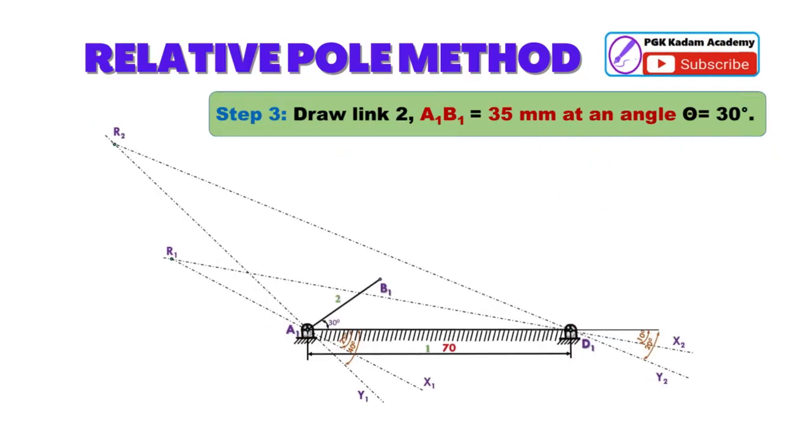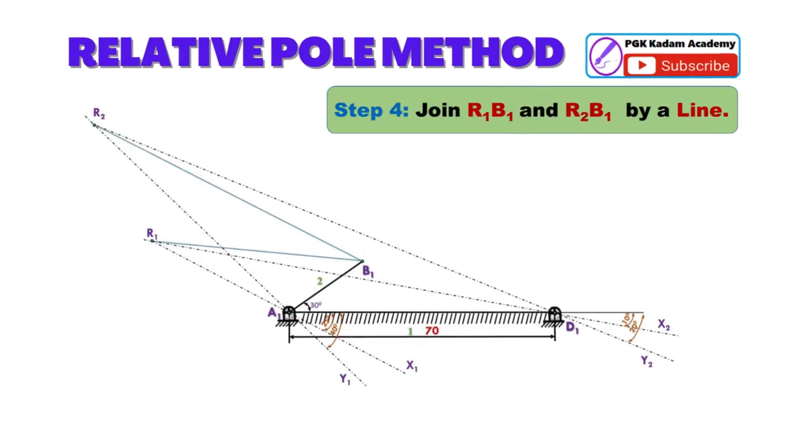Step 3: Draw link 2 A1B1 equal to 35 mm at an angle theta equal to 30 degrees.